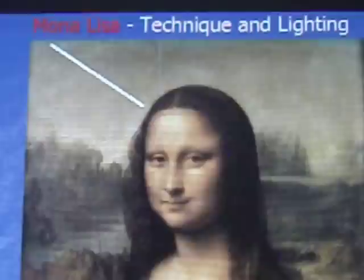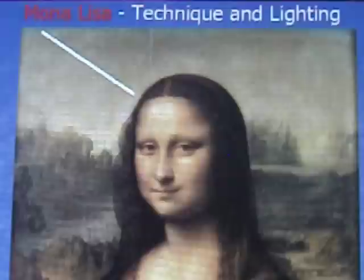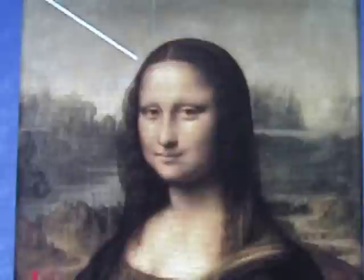Furthermore, the forearms, especially the left forearm — I put the blue bar to indicate it — should possibly be more in shadow. Nonetheless, the fabulous drapery of the forearms is clearly visible and shimmering. This highlights the mastery of Leonardo to arrange the elements of the composition optimally.